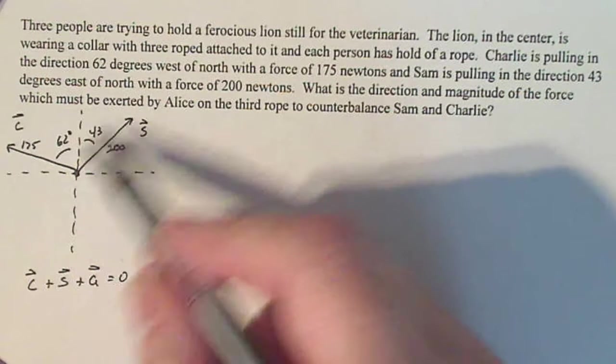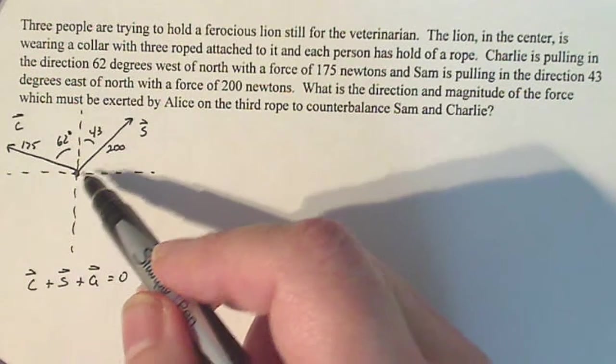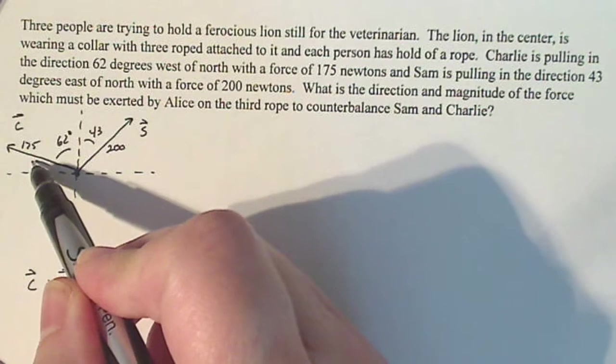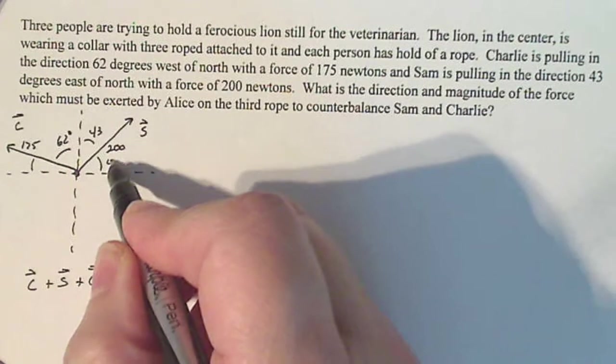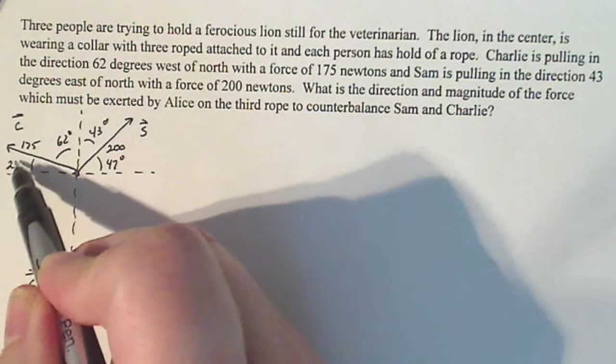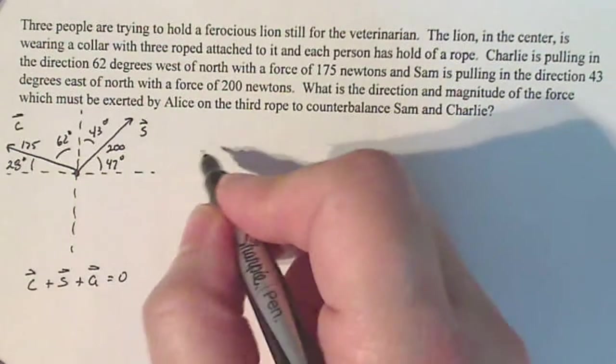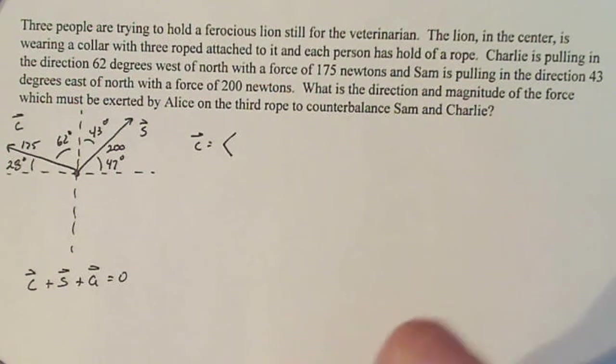Now, normally we use sine and cosine to define the i and j components of these guys. But if we want to do the way we did it in class, we always use the angle that's to the horizontal, it just works better. So this guy is 47 degrees because the sum of 43 and 47 is 90, and this is 28 degrees because the sum of 62 and 28 are also 90.